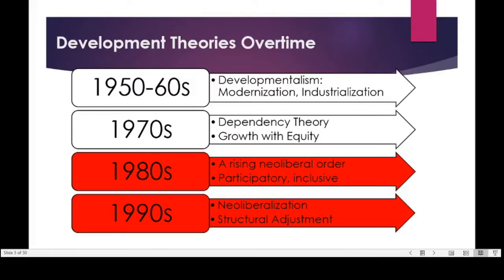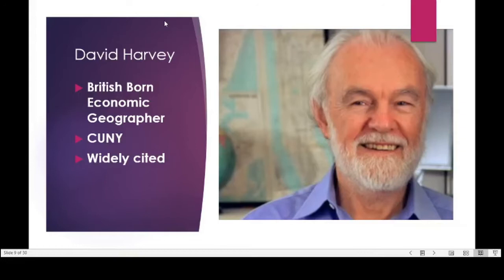Returning to familiar slides from the first few lectures on modernization theories and dependency theories, we also talked about sustainable development in the 1980s and 1990s, and about neoliberalization or the neoliberal order. In the 1980s the neoliberal order was rising alongside participatory and inclusive approaches, both sharing an emphasis on individual liberty. In the 1990s, neoliberalization and worldwide structural adjustments were facilitated by development actors such as the World Bank and the International Monetary Fund.